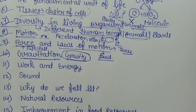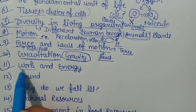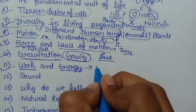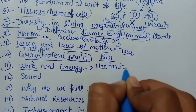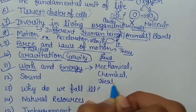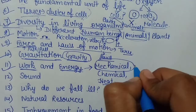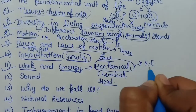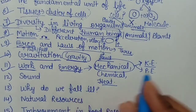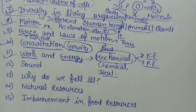Next जो हमारा chapter रहेगा — Work and Energy. हमने कुछ काम किया है और energy क्या है — तो हम बात करेंगे mechanical work के बारे में। Energy की wide range है — mechanical energy, chemical energy, heat energy। लेकिन as we are dealing with motion and mechanics, हम बात करेंगे mechanical energy के बारे में। Mechanical energy further दो type की होती है — kinetic energy and potential energy: motion की वज़ह से kinetic energy रहती है और position की वज़ह से potential energy।